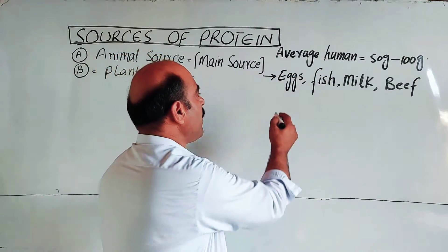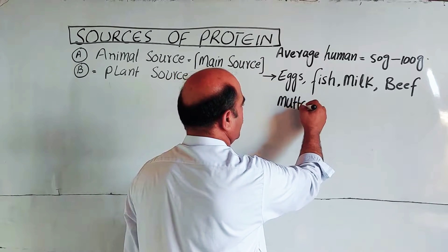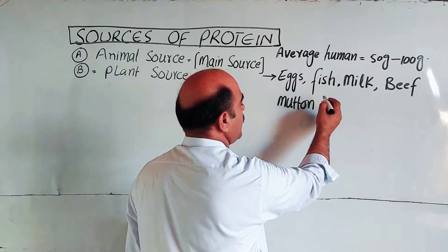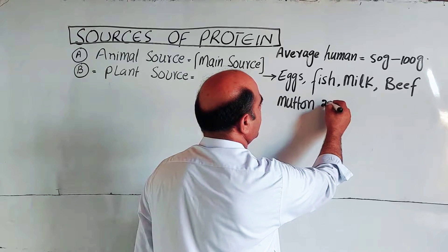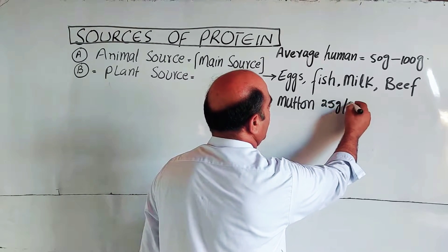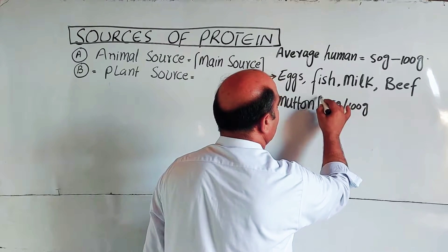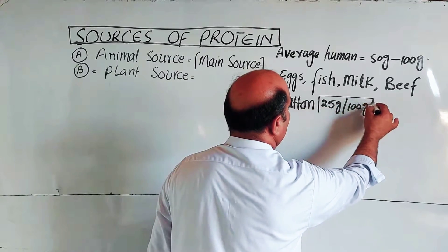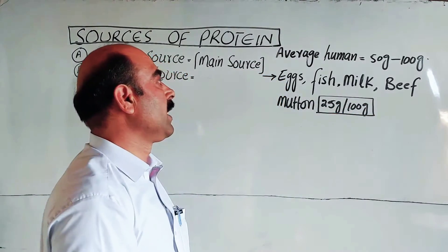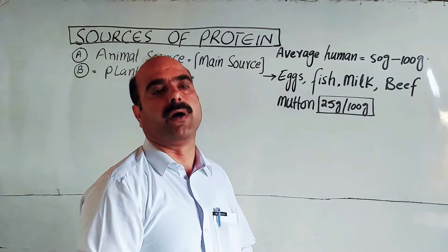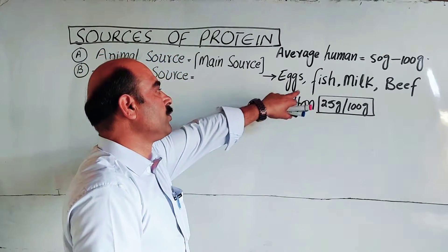The protein content in beef is approximately 25 grams per 100 grams. So per 100 grams, the protein content is 25 grams.